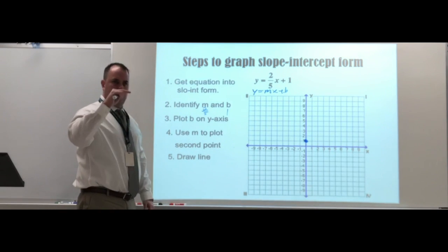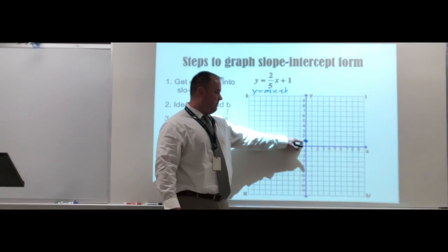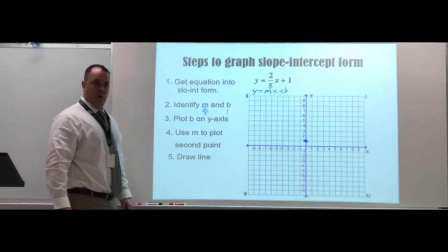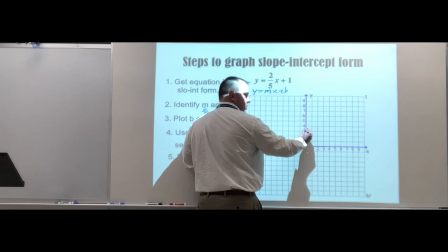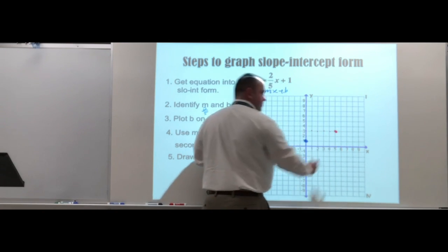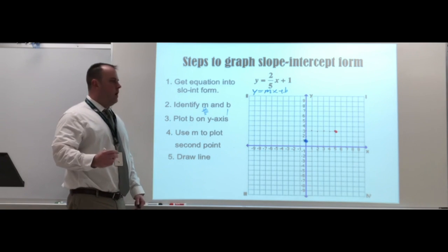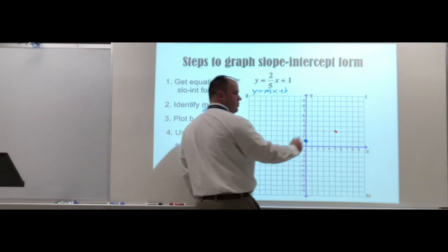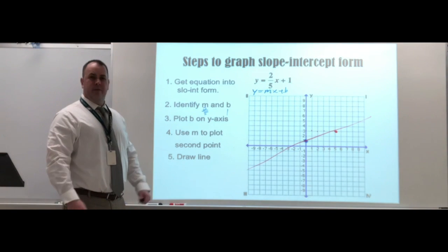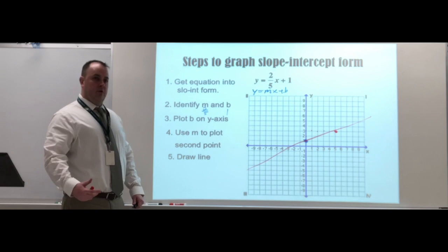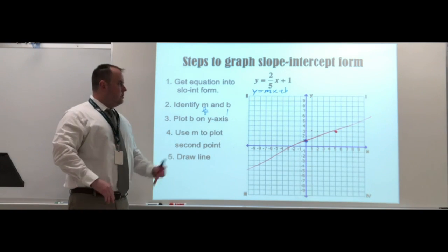Put a dot at the y-intercept. I tell students to leave your pencil on that point — if you move it, people tend to drift back to the origin. From that starting point, count rise over run: vertical first, then horizontal. Since both are positive, go up 2 and right 5. Those are your two points. You only need two points to graph a linear function. Draw it as straight as you can — linear equations are straight lines with no curve or bend.